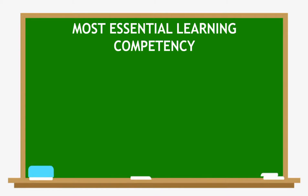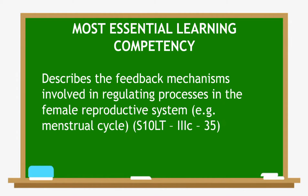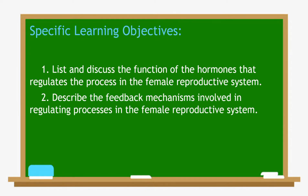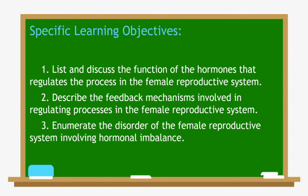It describes the feedback mechanisms involved in regulating processes in the female reproductive system. Our specific learning objectives: first, discuss the function of the hormones that regulate the processes in the female reproductive system; second, describe the feedback mechanisms involved in regulating processes in the female reproductive system.